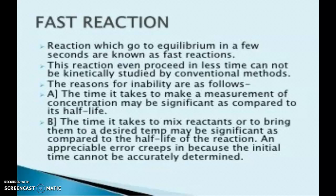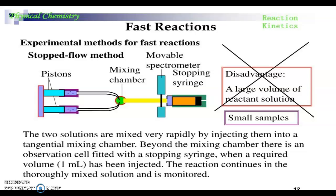Thus we need some techniques to study fast reactions. We have many experimental methods for fast reactions. The first one is the stopped flow method. The word itself is telling us we are stopping the flow of reactants in order to study the rate of reaction. Here the apparatus setup is as shown in the figure.